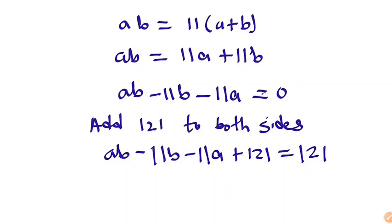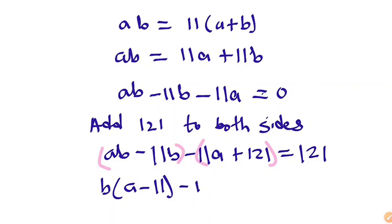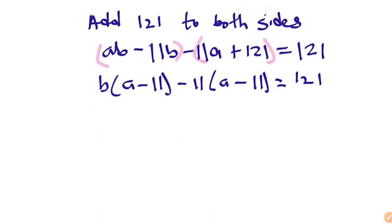We add 11 squared — that's 121 — to both sides. Now let's look for common factors. We can see that b is common in the first two terms: b times bracket (a minus 11), and minus 11 is the common factor in the remaining terms: minus 11 times (a minus 11). So we get (b minus 11)(a minus 11) equals 121.